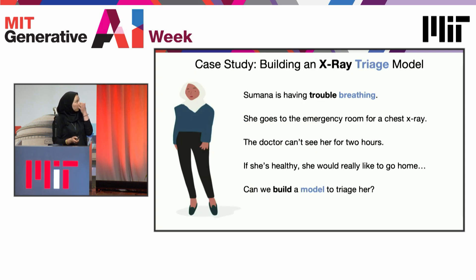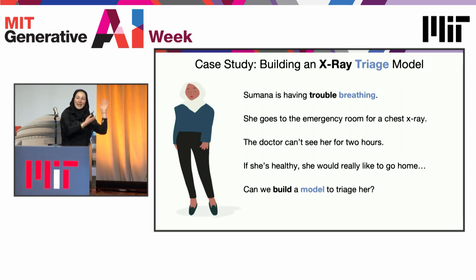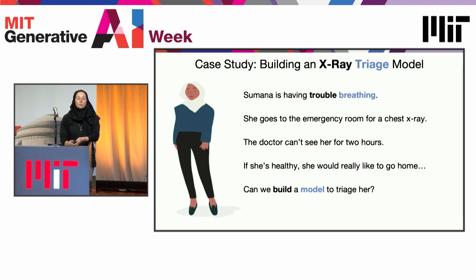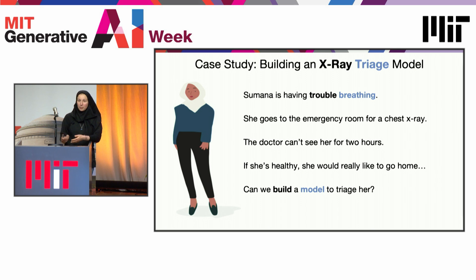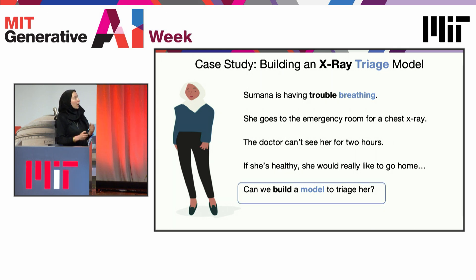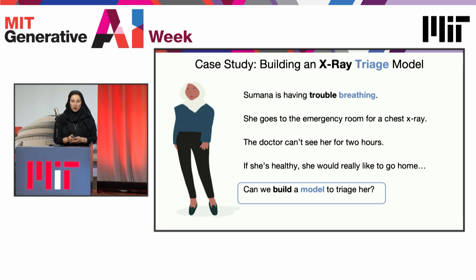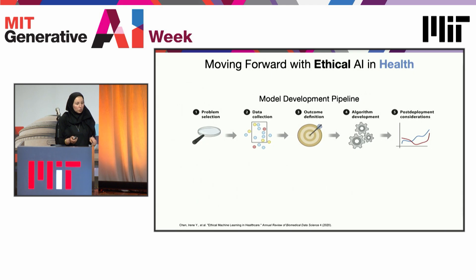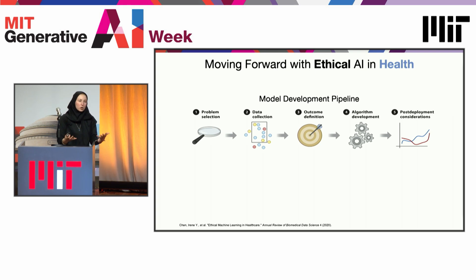But how do we actually train AI in a healthcare setting? Let's pretend that somebody approaches me and says they want to build an x-ray triage model. You work at a hospital in Boston, and this is something you want to do. If we wanted to build a model to triage a patient like Sumana at a hospital like MGB, what we might do is go through this pipeline that everybody does—not just in healthcare, but in every single setting where you might build AI.